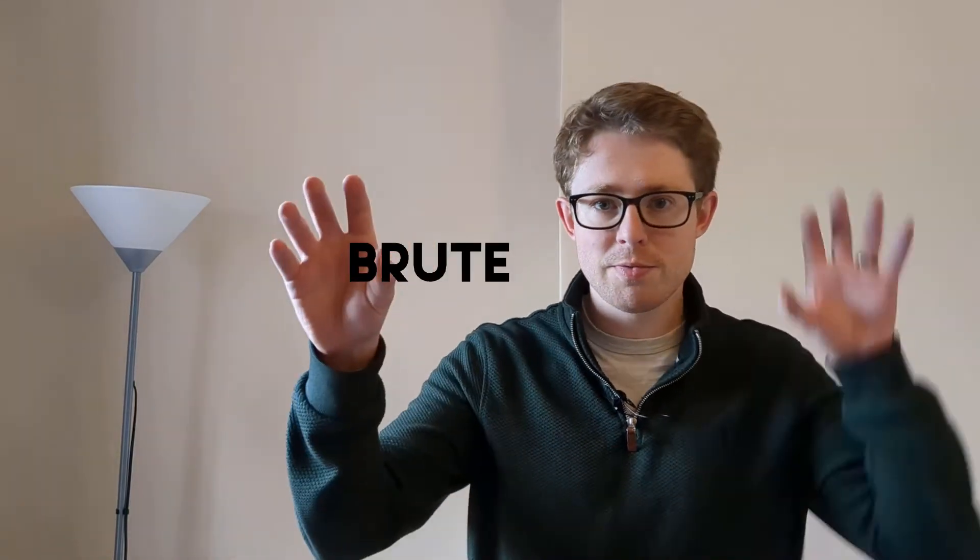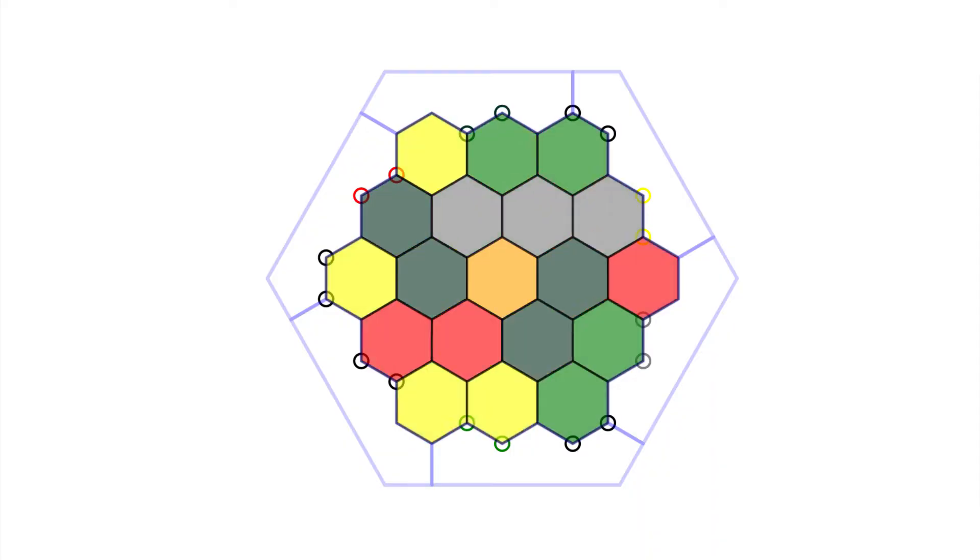But how does the program know where to first place the tiles before performing these checks? Here I used a complex programming technique called brute force. The program simply places all the tiles at random, checks to see whether any of the rules are broken, if they have been just tries it again.